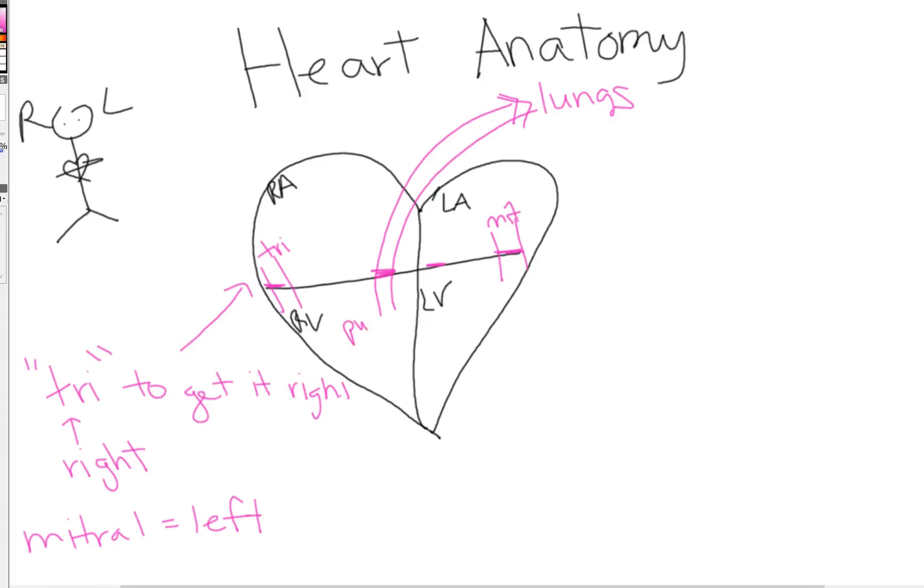Over on the left side of your heart, we have a valve going from your left ventricle out to your aorta and then out to the rest of your body. So that's going to be your aortic valve, which makes sense because that's where it goes.